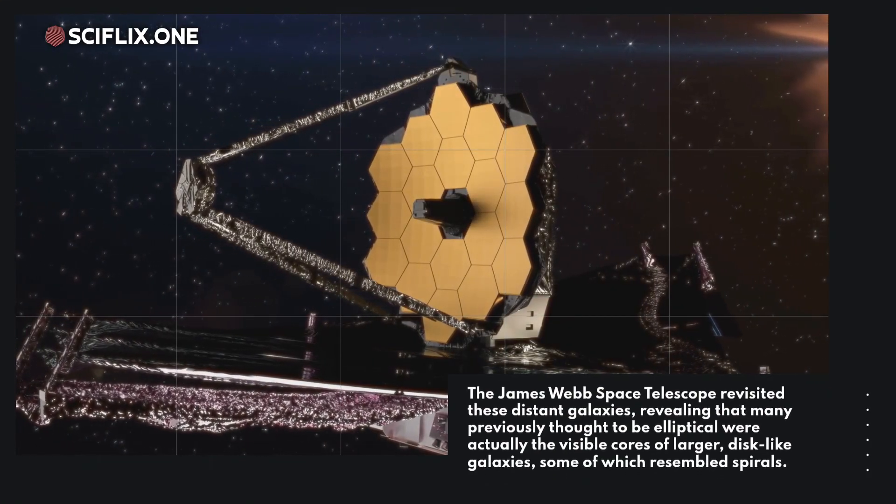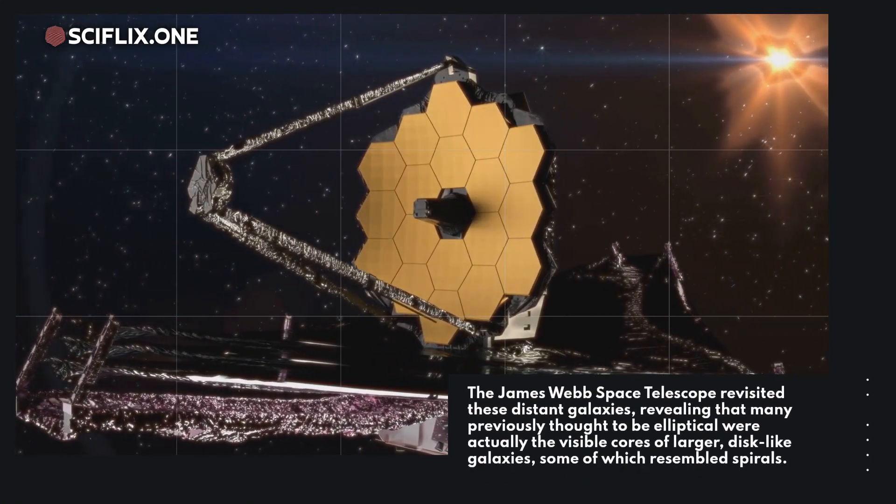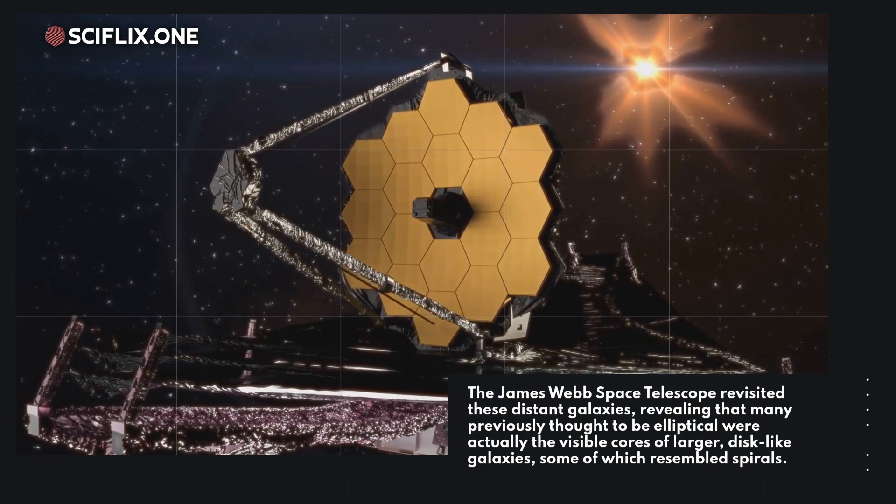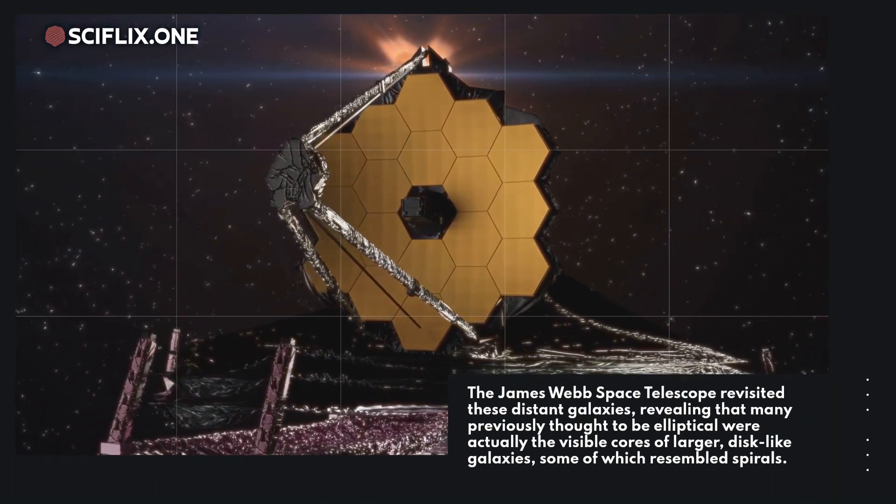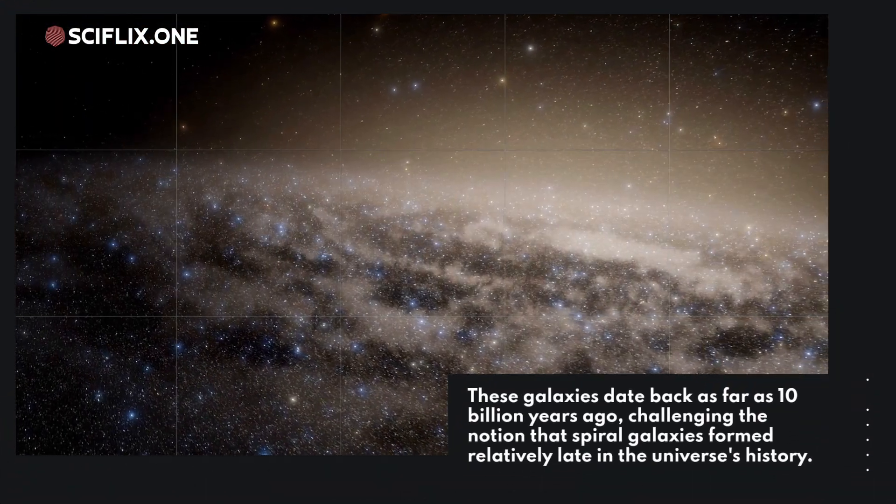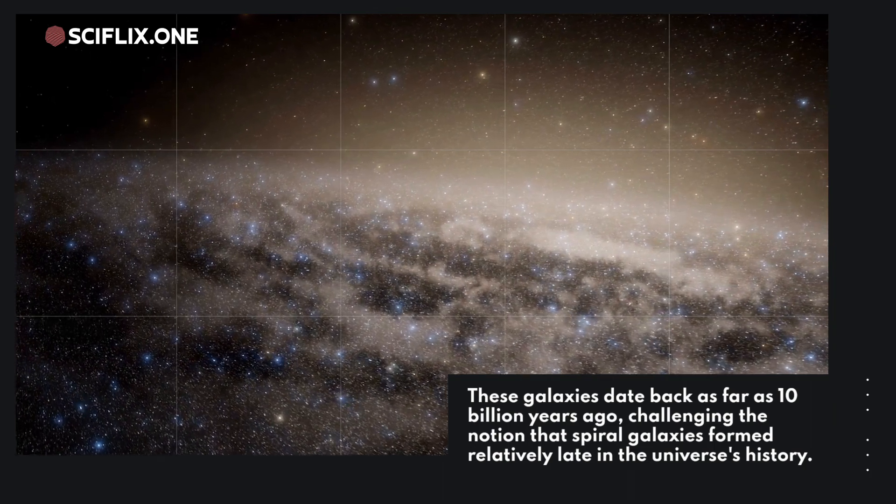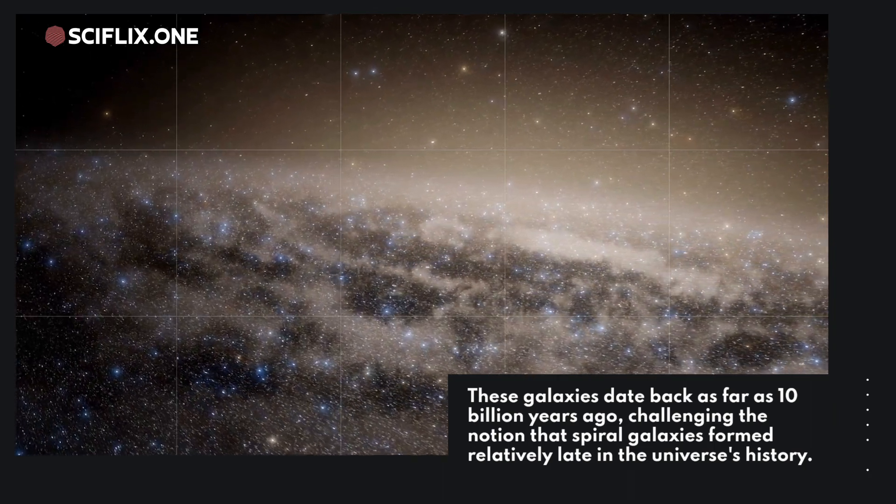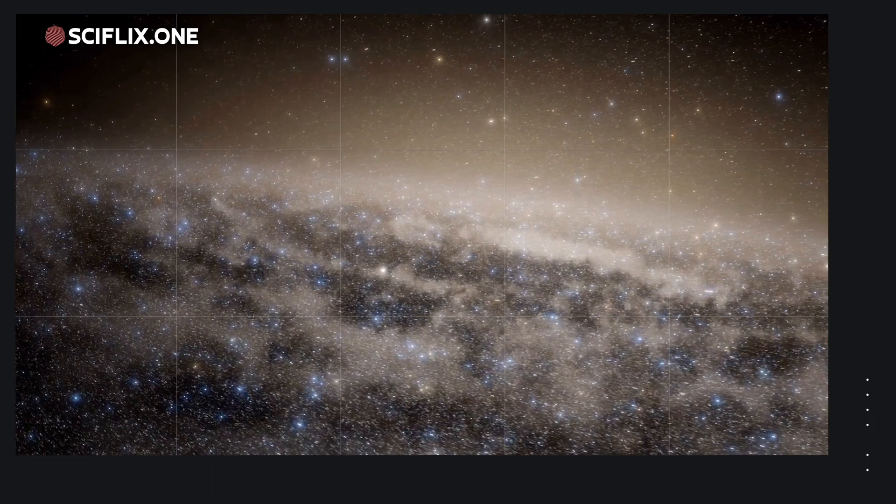The James Webb Space Telescope revisited these distant galaxies, revealing that many previously thought to be elliptical were actually the visible cores of larger, disk-like galaxies, some of which resembled spirals. These galaxies date back as far as 10 billion years ago, challenging the notion that spiral galaxies formed relatively late in the universe's history.